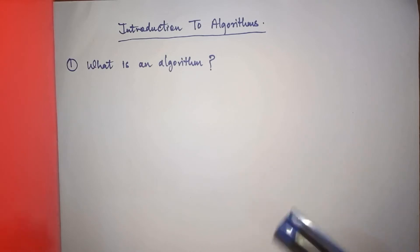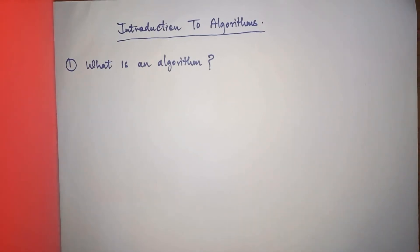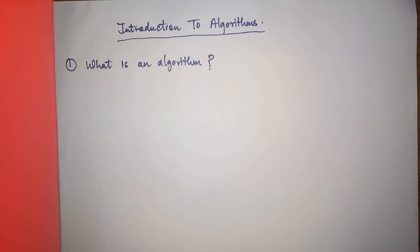The first question that comes to mind is: what is an algorithm? An algorithm is just a sequence of unambiguous steps. It involves a sequence of instructions to solve a particular problem. Whatever the problem, you have a procedure to solve it, and that procedure which involves a sequence of unambiguous steps is nothing but the algorithm.